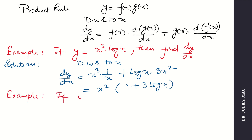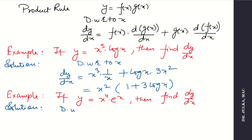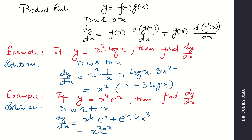Next example: if y equals x to the power 4 times e to the power x, find dy by dx. Derivative of x to the power 4 is 4x cube and derivative of e to the power x is e to the power x. So dy by dx equals x to the power 4 times e to the power x plus e to the power x times 4x cube. Taking x cube times e to the power x as common, the answer is x cube times e to the power x multiplied by (x plus 4).